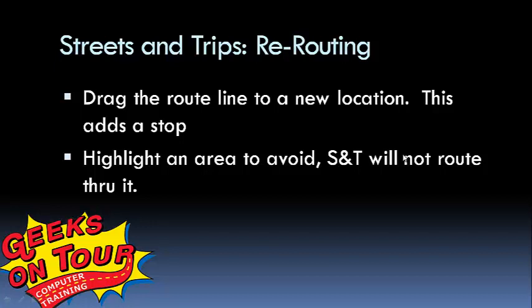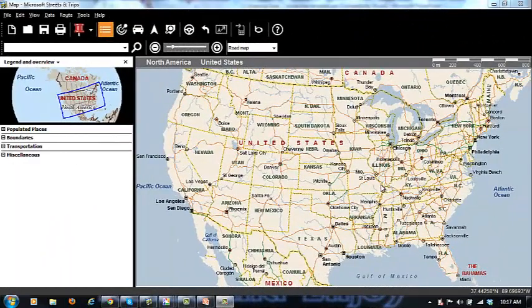Hi, this is Chris Gould with Geeks on Tour. This video lesson on Streets and Trips is about rerouting. Sometimes the route takes you through an area you don't want to go through. You have two choices: you can drag the route line to a new location, but understand that this adds a stop, or you can highlight the area you want to avoid and Streets and Trips will not route through that.